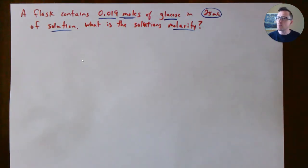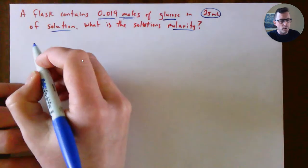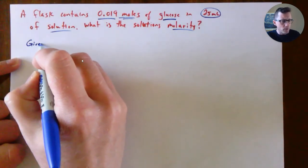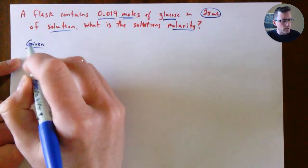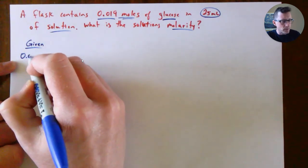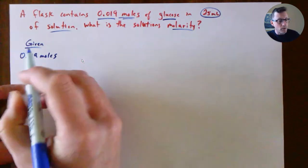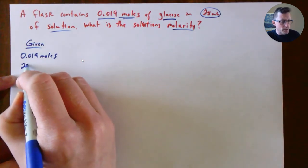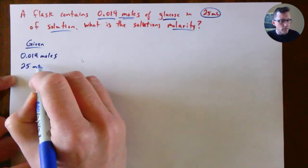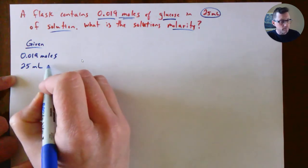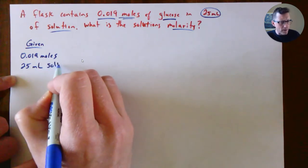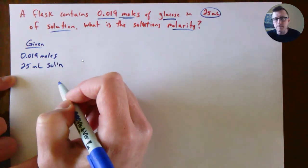As you go through these problems, get in the habit of identifying what is given to you. What do we know from the question? What is given is that we have 0.019 moles, and we also have 25 milliliters of solution.